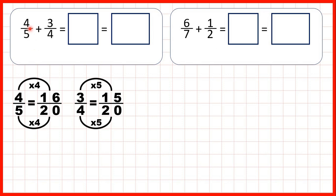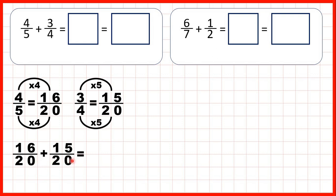Instead of four-fifths we can write sixteen-twentieths, and instead of adding three-quarters we can add fifteen-twentieths. Now that the denominators are the same, we keep the common denominator in our answer, and sixteen plus fifteen is thirty-one.